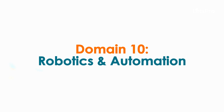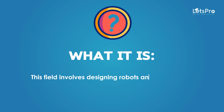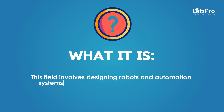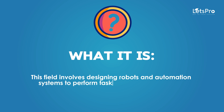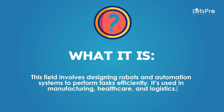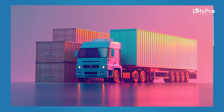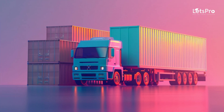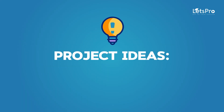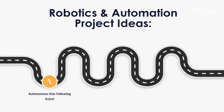Domain 10: Robotics and Automation. This field involves designing robots and automation systems to perform tasks efficiently. It is used in manufacturing, healthcare, and logistics. Project ideas: Autonomous line-following robot, Warehouse automation system, Robotic arm for precision manufacturing, Smart delivery robot, and Home cleaning robot.